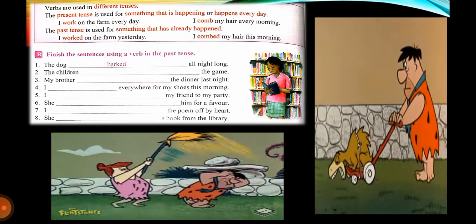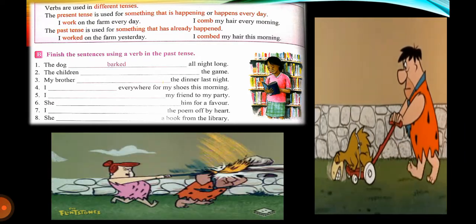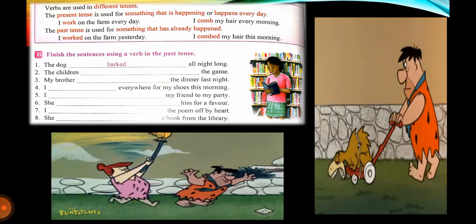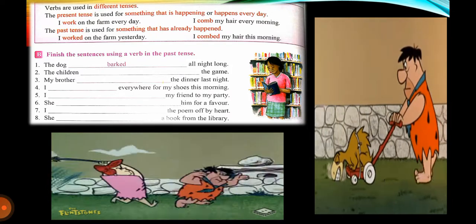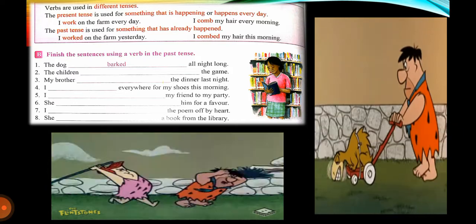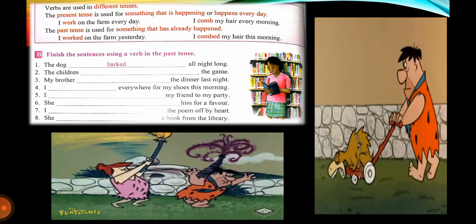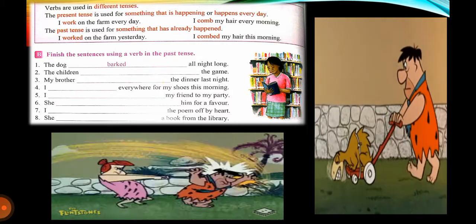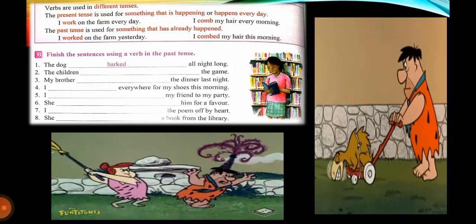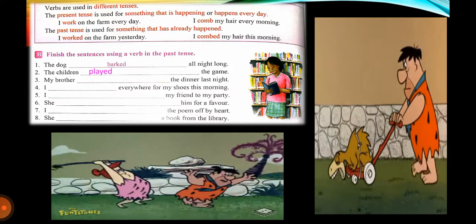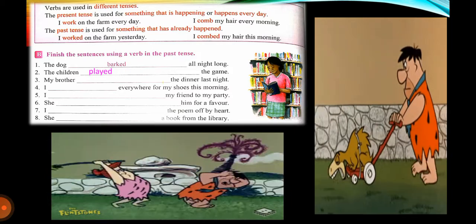Our question is: finish the sentences using a verb in the past tense. We have finished our first line — the dog barked all night long; 'barked' is the second form of 'bark', which has been done for us. The children played the game — 'played'. My brother enjoyed the dinner last night — 'enjoyed'.